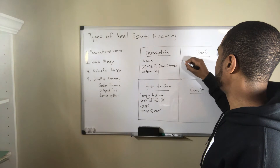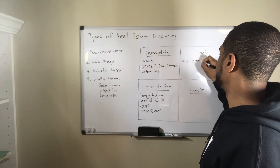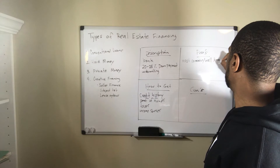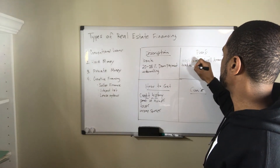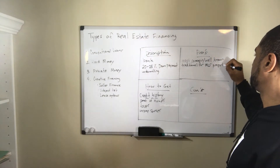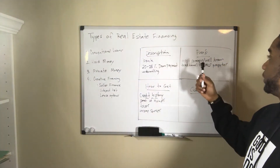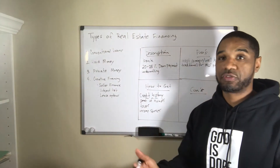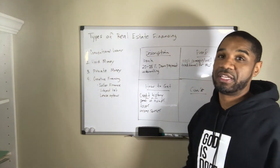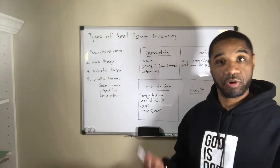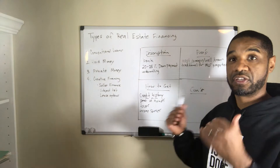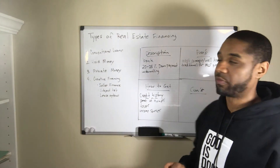The benefits of conventional financing: it's the most common and well-known type — this is the traditional method for MLS properties. Most people know about going to a bank; when you bought your first home you probably went to Wells Fargo or similar. If you're working with a realtor and looking on the MLS, conventional financing is the way you're going to go from that perspective.